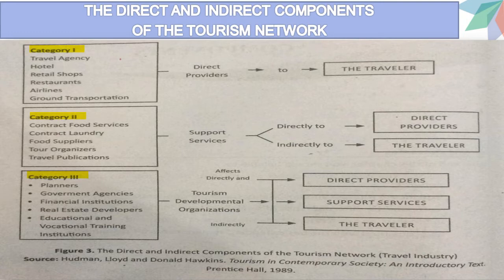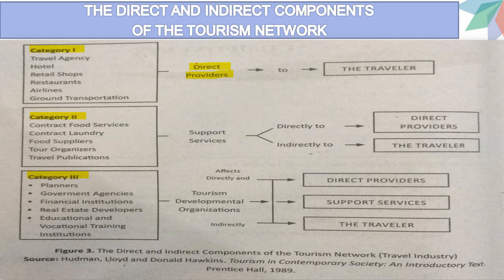Category 1 is composed of what we call direct providers — for example, travel agencies, hotels, retail shops, restaurants, airlines, and ground transportation. They are called direct providers because they represent the sectors of the industry that are visible to the travelers — they are visible, we can interact with them right away, and they can entertain us as well.